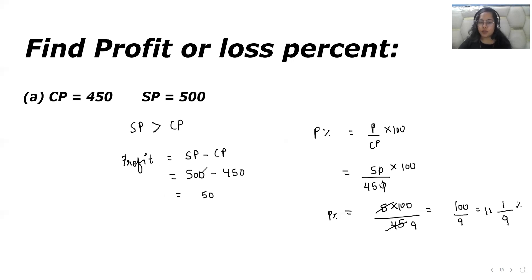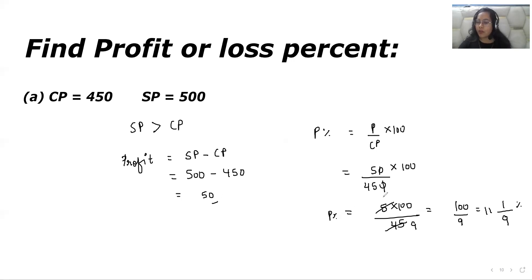So what are the steps? First, check whether profit or loss occurs in the question. If the selling price is greater, find the value of profit using the formula SP minus CP. After that, apply the formula of profit percentage — profit over CP into 100. The value of profit you calculated and the value of CP given in the question — put the values in and calculate your answer.